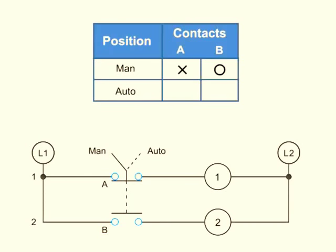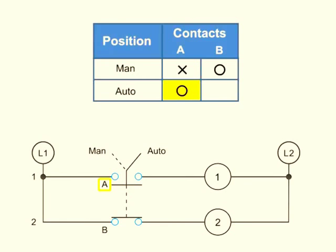When the switch position is set to AUTO, A is O or open and B is X or closed.